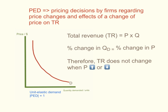In the case of unit elastic demand, total revenue does not change because the percentage change in quantity will always be equal to the percentage change in price. Total revenue will not change whether price rises or falls.